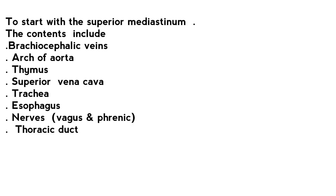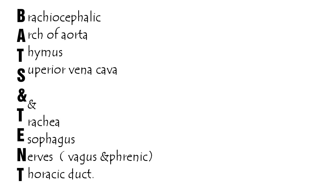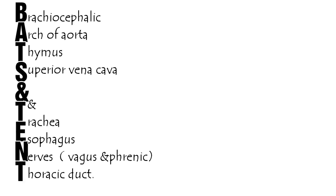In this video we shall look at the contents of the mediastinums and their mnemonics. Starting with the superior mediastinum, the contents include: brachiocephalic veins, arch of aorta, thymus, superior vena cava, trachea, esophagus, nerves (vagus and phrenic), and thoracic duct. Using their first letters we can make a mnemonic: BADSAND TENT.